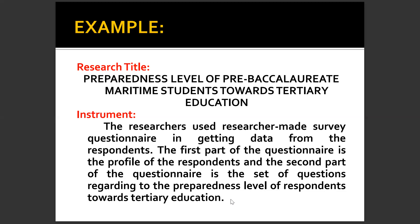The second part of the questionnaire is the set of questions regarding the preparedness level of respondents towards tertiary education. To be more accurate, you need to describe the parts of your survey questionnaire and the scales that must be used — for example, a four-point Likert scale: strongly agree for four, three for agree, two for disagree, and one for strongly disagree. You may also include the number of items for each indicator in your research instrument.